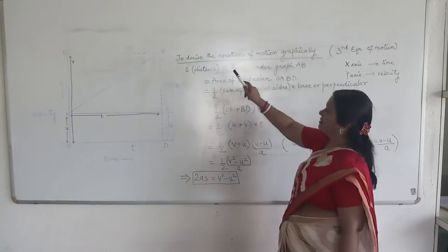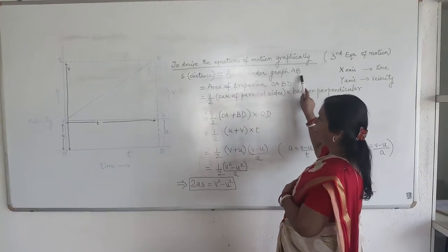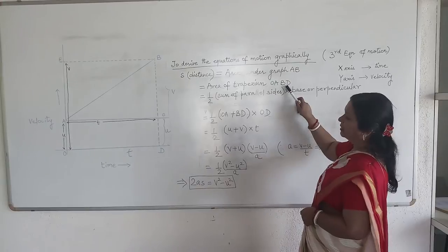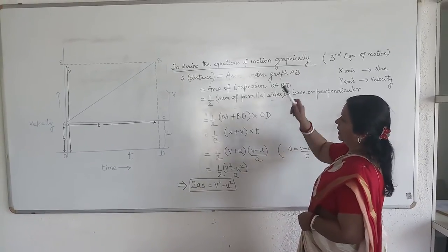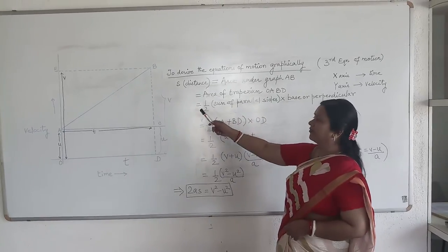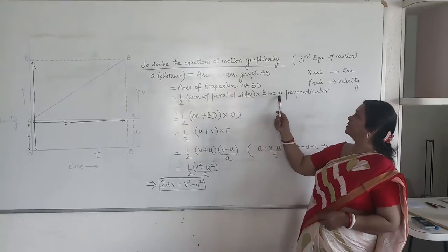So S is the distance. Distance is found in a velocity time graph under the graph AB. So area of the trapezium will be OABB. Now, what is the formula of area of trapezium? Area of trapezium is equal to half sum of parallel sides into base or the perpendicular.